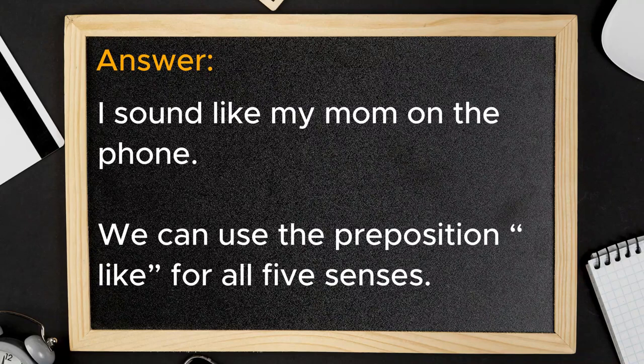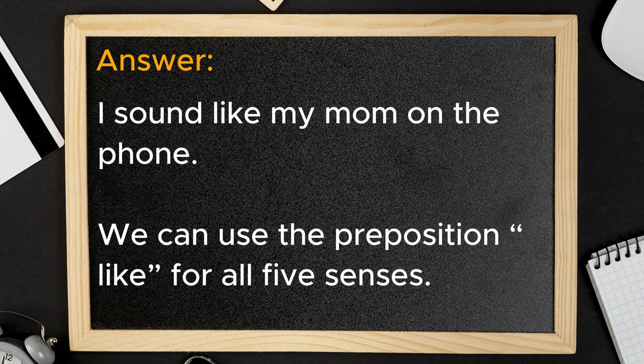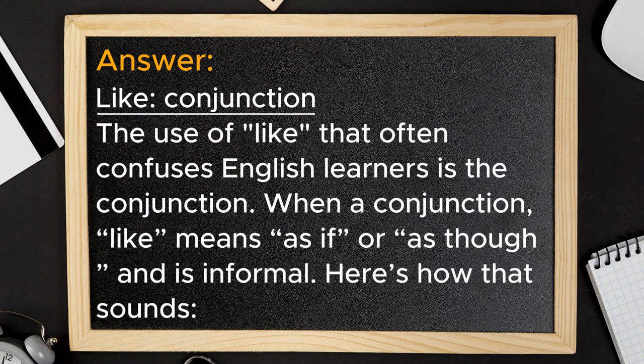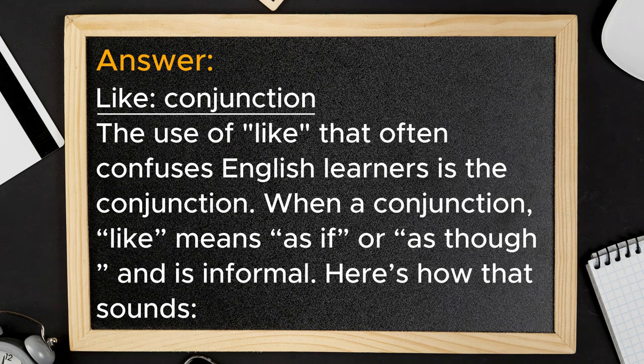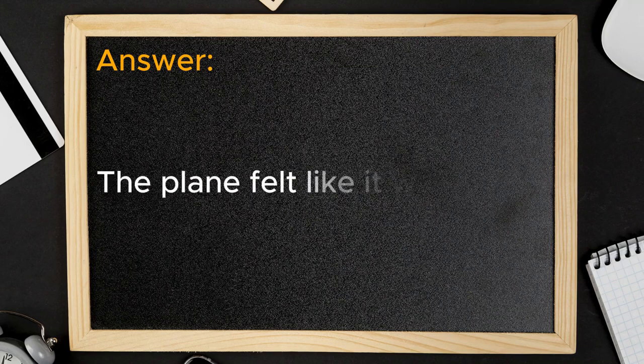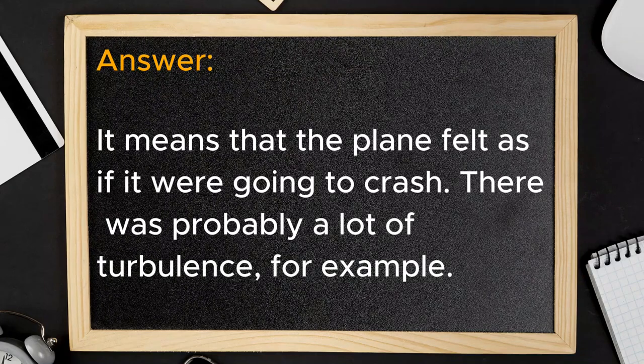We can use the preposition like for all five senses. The use of like that often confuses English learners is as a conjunction. When a conjunction, like means as if or as though and is informal. Here's how that sounds.